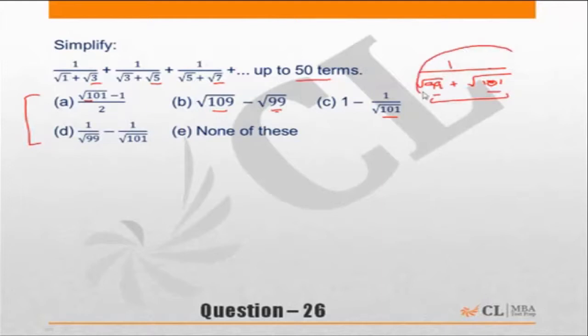So if instead of all 50 terms, if I look at just the first term, let me work only on the basis of the first term. If the first term was only being used, then what should my choices be? Instead of under root 101 it would be under root 3.